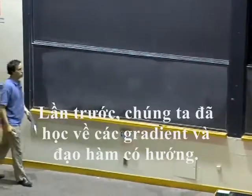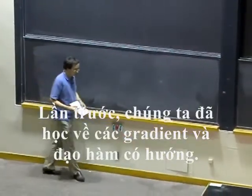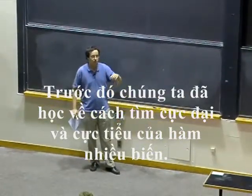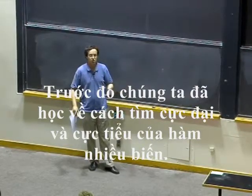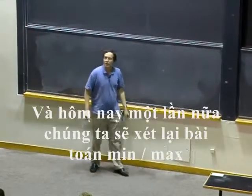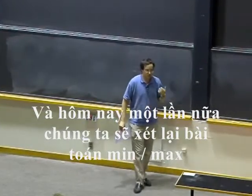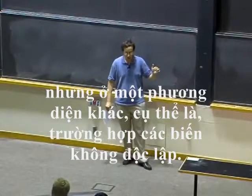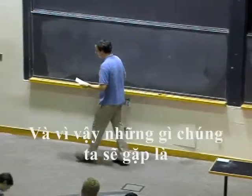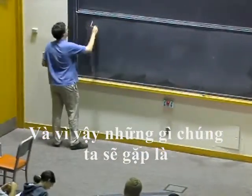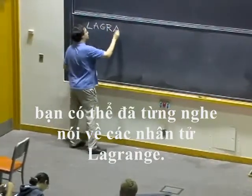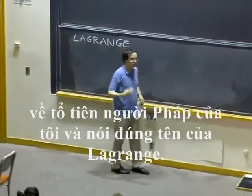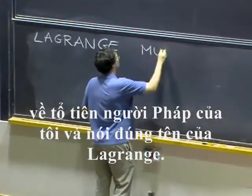Last time we saw things about gradients and directional derivatives. Before that we studied how to look for minima and maxima of functions of several variables. Today we're going to look again at min-max problems, but in a different setting, namely when the variables are not independent. What we'll see is the method of Lagrange multipliers. And this is the one point in the term when I can shine with my French accent and say Lagrange properly.